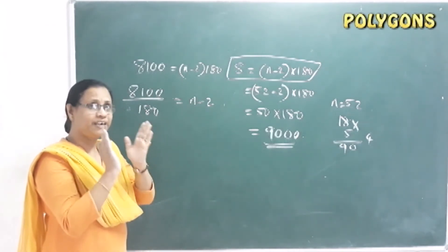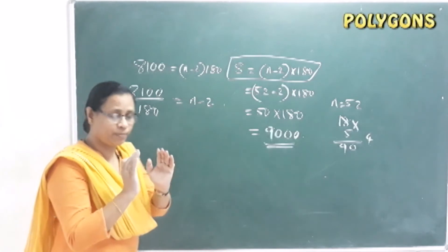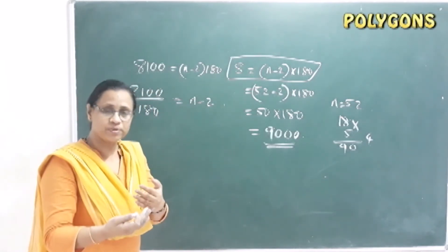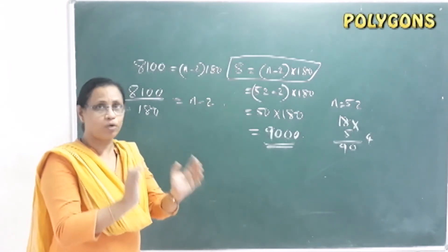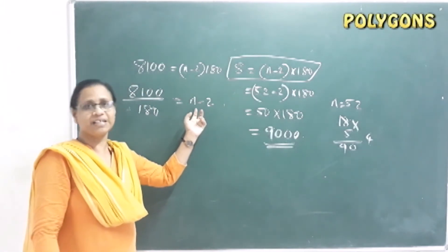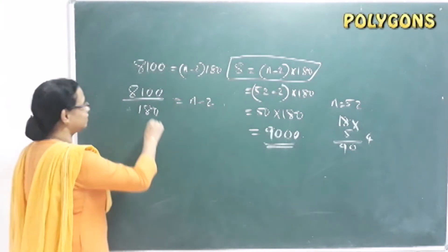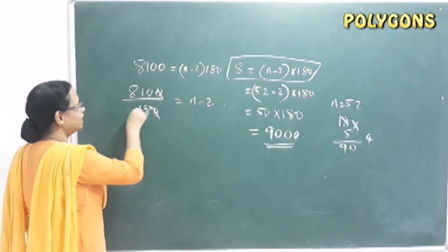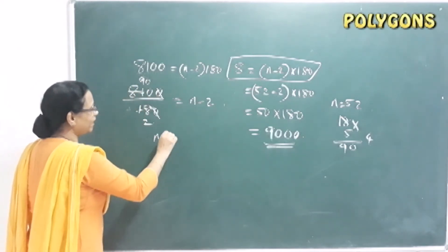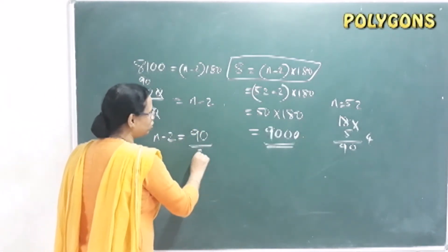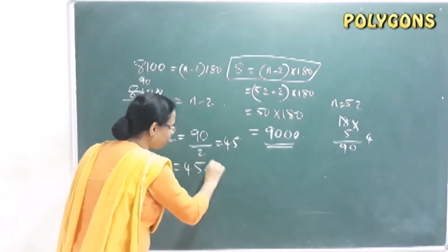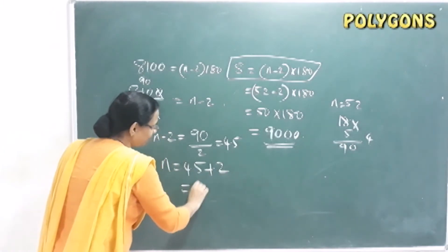The minimum polygon has three sides. Dividing: 8100 ÷ 180 = 45. Wait — that simplifies: first cut gives 90, and 90 ÷ 2 = 45. So N − 2 = 45, which means N = 45 + 2 = 47 sides.